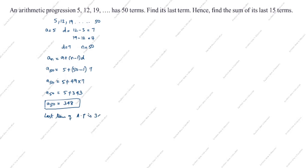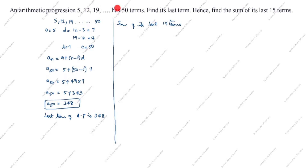Now we will find the sum of its last 15 terms. How will we find the last 15 terms? You see here, this is 50 terms. 50 minus 15 — the last 15 terms means what comes from the 35th term onward. So what we will find is S₅₀ minus S₃₅, and that will give us the sum of its last 15 terms.